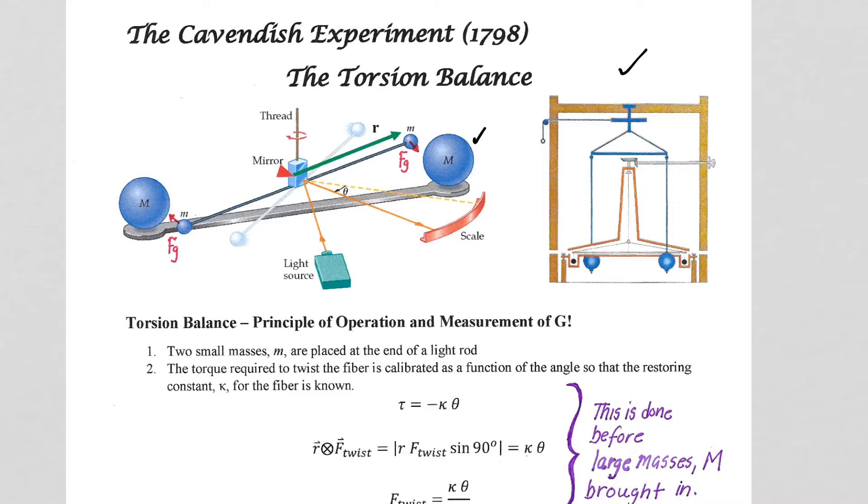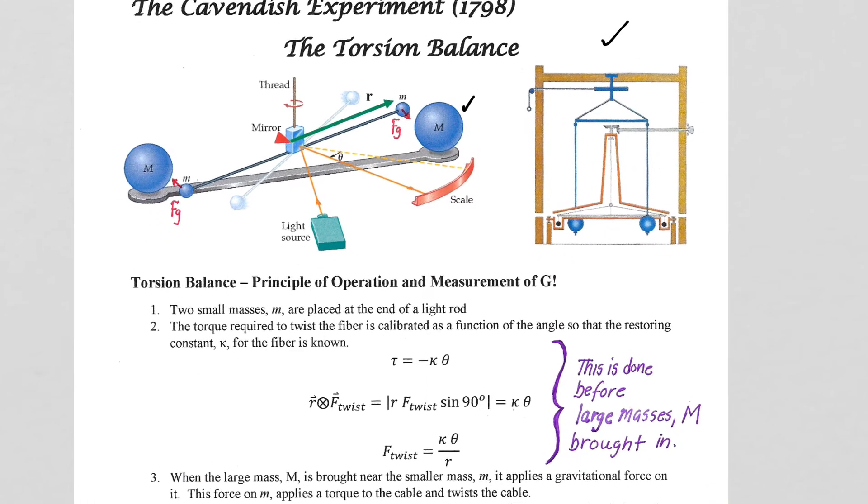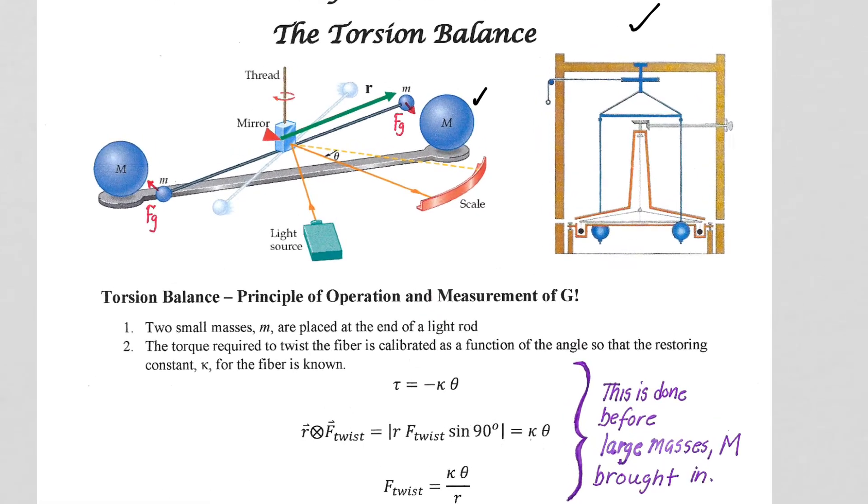So you need an extremely sensitive apparatus to do this. And as it turns out, the torsion balance gave him that capability. So let's see how the torsion balance works. The first thing we need to understand about the torsion balance is to recognize that fundamentally it is going to utilize a thread that when it twists, as shown here, it will want to untwist.